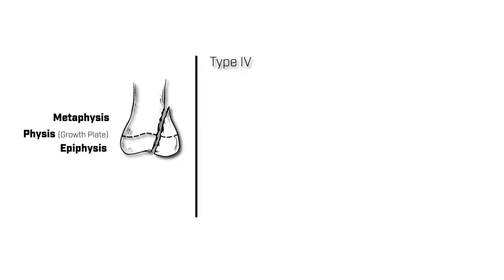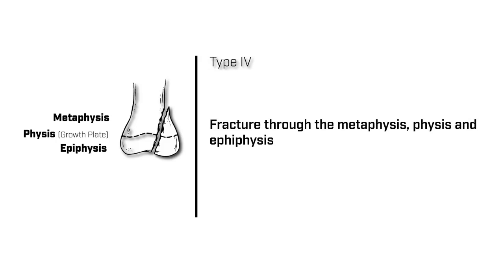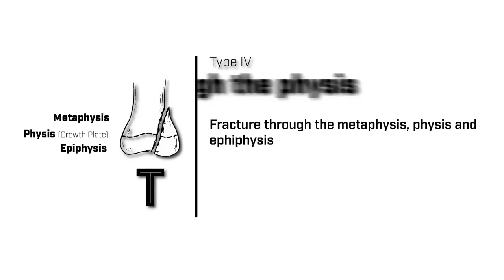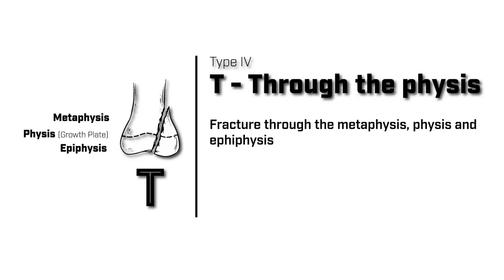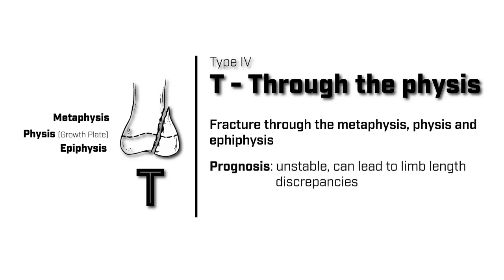Type 4 Salter-Harris fractures are those that go through the growth plate and through the metaphysis and epiphysis. In our mnemonic, we are now at the letter T, which stands for a fracture which goes all the way through the metaphysis, the growth plate, and epiphysis. Prognosis is variable because this is mostly an unstable fracture, and operative management should be considered.